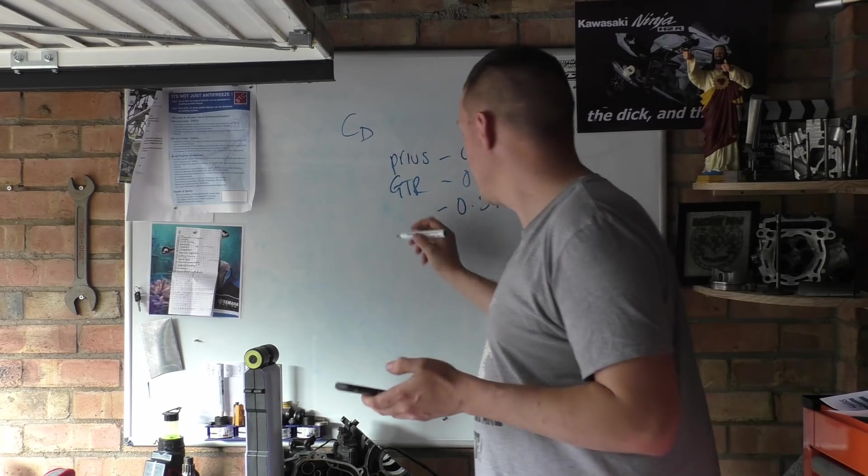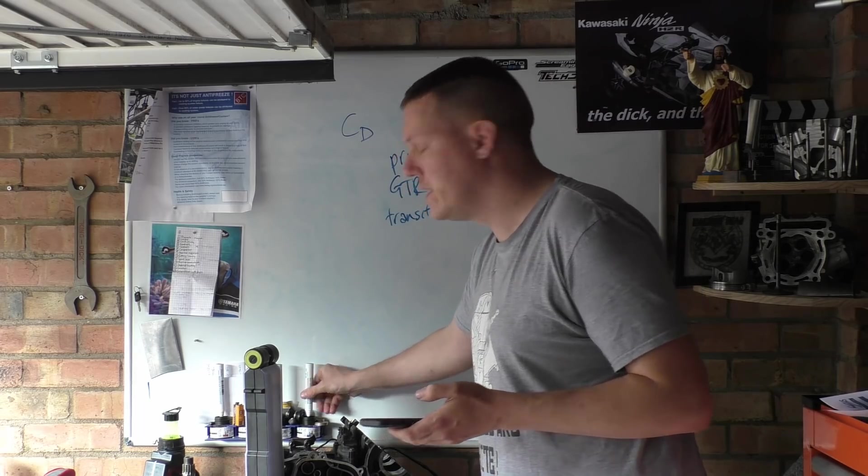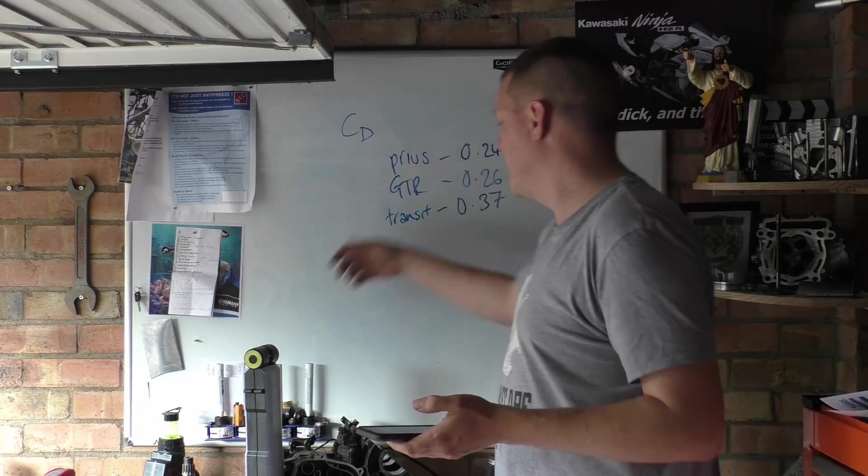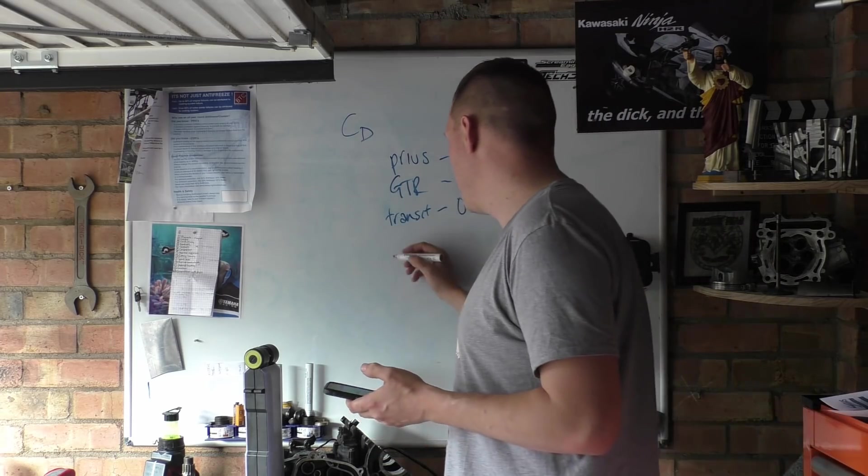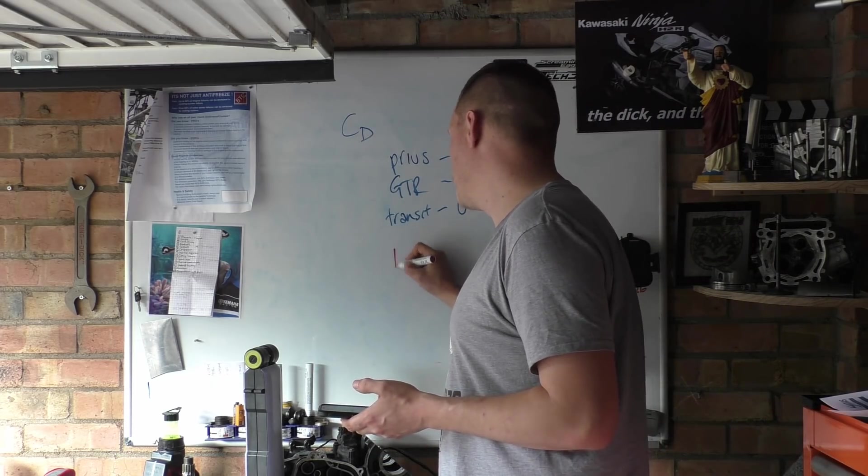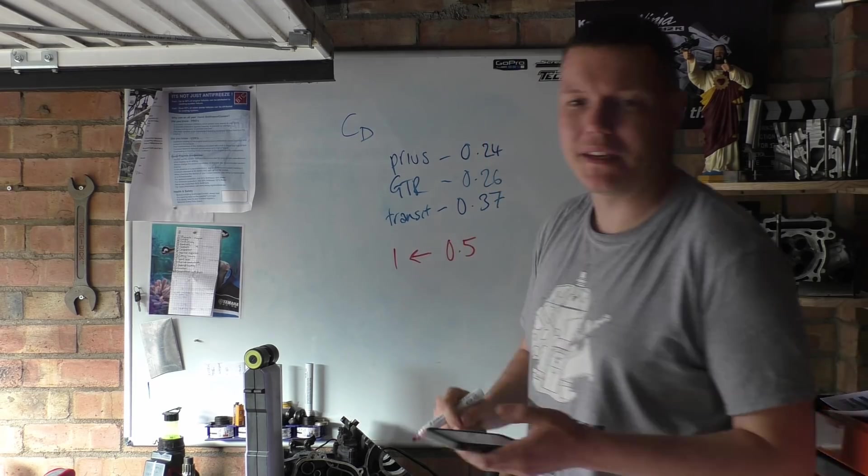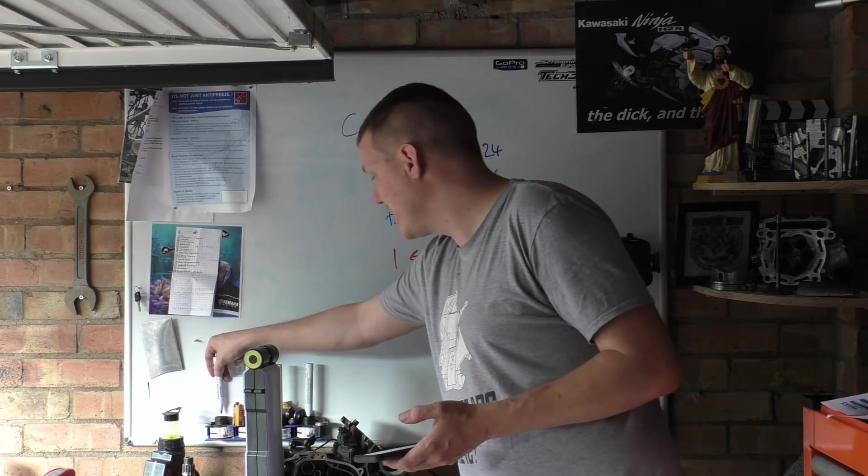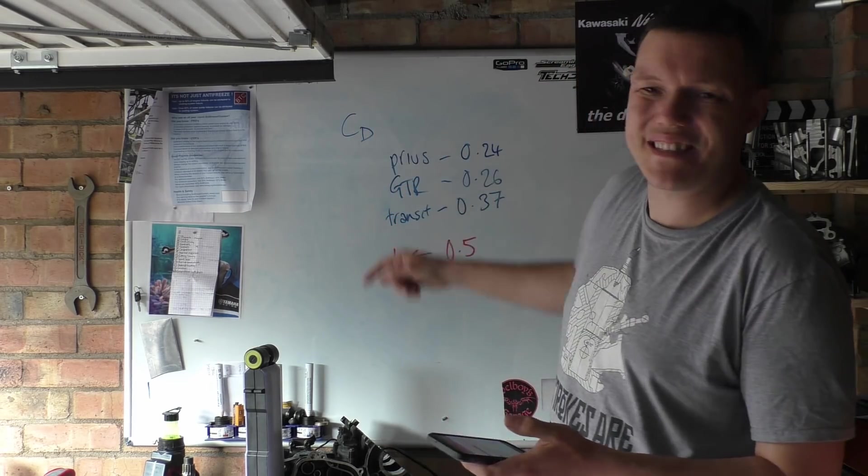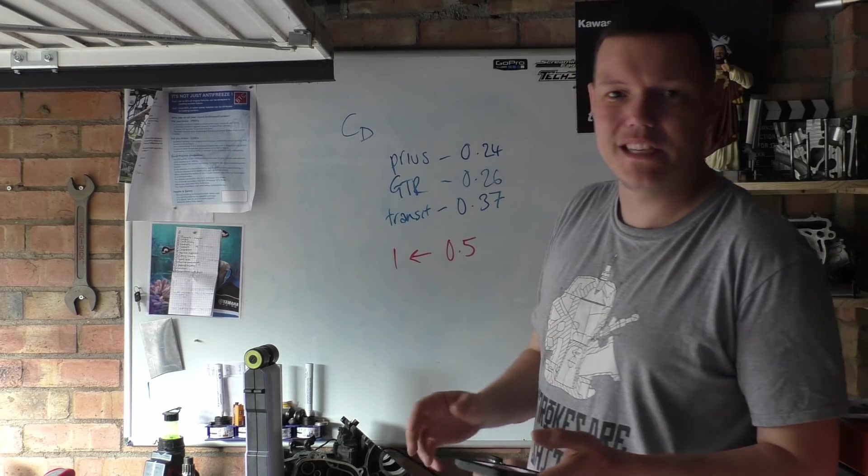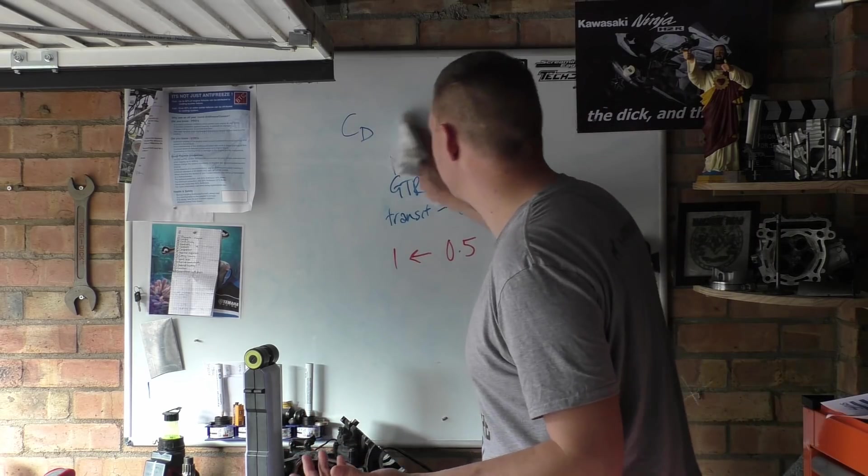The CD of a motorbike is anywhere between 0.5 to 1, something like that. You're like, the coefficient of drag for a Transit is better than a bike, but like I say, this has no scope on size.